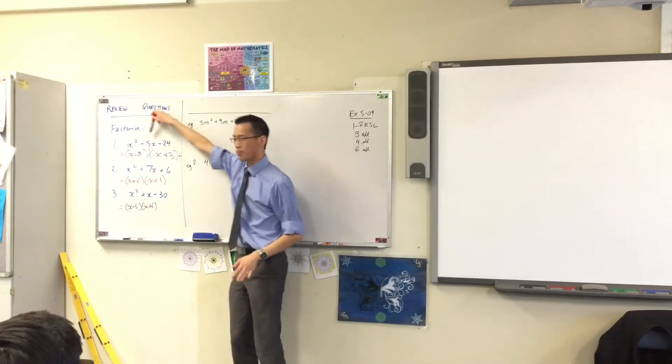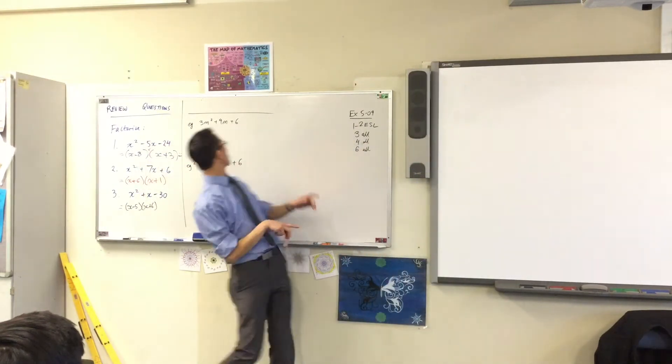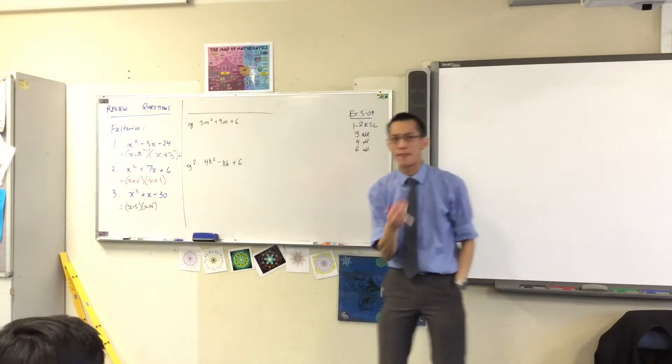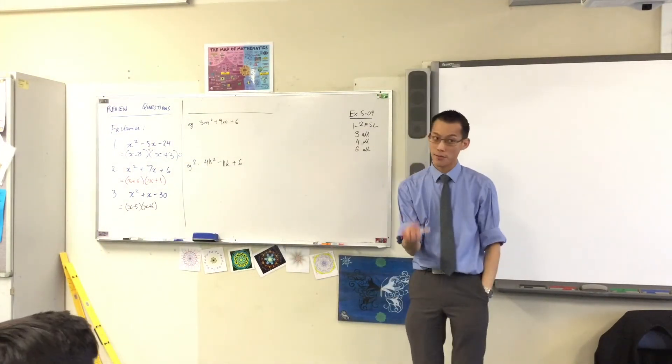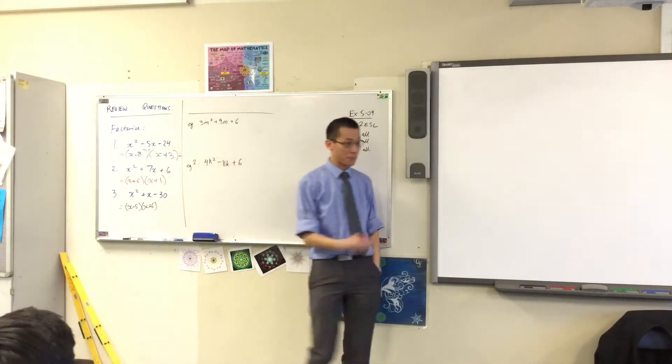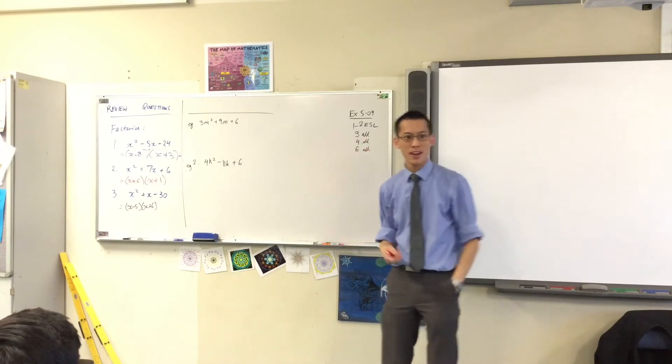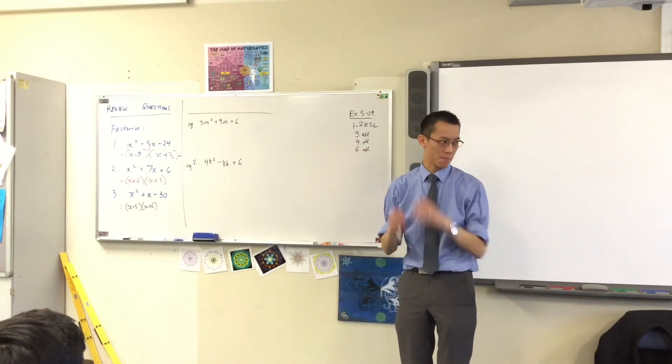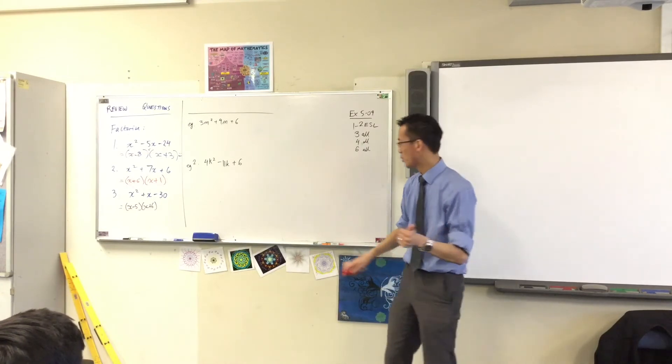You often get numbers that are prime, like 5, 7, 11. You get them in the middle. You're not going to find factors for prime numbers, at least not very often. Whereas these numbers on the end, look at this, 24, 6, 30. These are numbers that are easy to factorize. So it's clearly something times something most likely went into making those numbers. Fantastic. Well done.